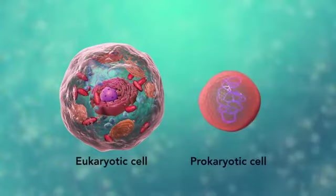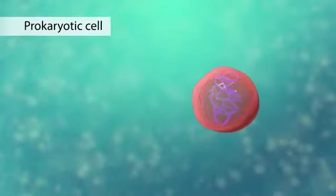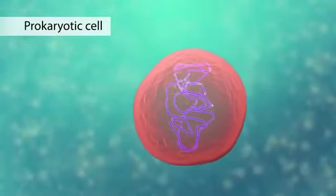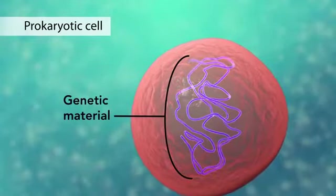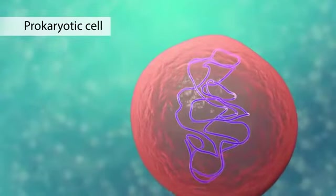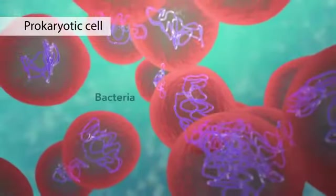The second category is prokaryotic cells. They don't have a nucleus or membrane enclosed organelles. They do have genetic material but it's not contained within a nucleus. Prokaryotic cells are always one-celled or unicellular organisms such as bacteria.